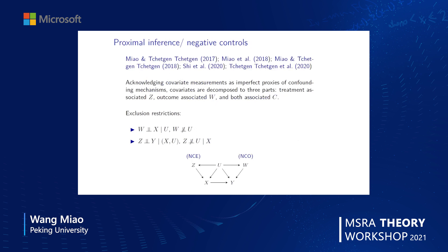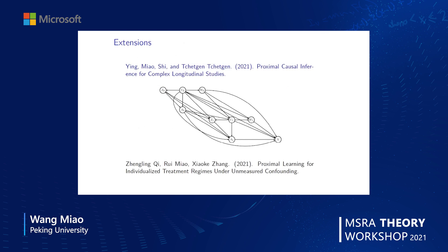This proximal or negative control inference framework acknowledges covariate measurements as imperfect proxies of confounding and decomposes covariates into three parts: Z is correlated with the treatment X, W is correlated with the outcome Y, and C is correlated with all variables. Under the assumption that Z does not affect Y or W, and X does not affect W, we establish identification and semi-parametric inference under this framework. In biomedical and epidemiological studies, such proxies or negative controls are widely available. We further extended this framework to complex longitudinal studies, and some other authors extended it to individualized treatment regimes.